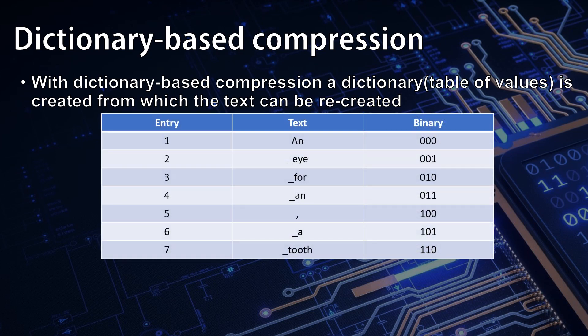If we consider the common phrase 'an eye for an eye, a tooth for a tooth', we can see that a dictionary of just seven words could accurately recreate this phrase. The underscores in this example table represent spaces.